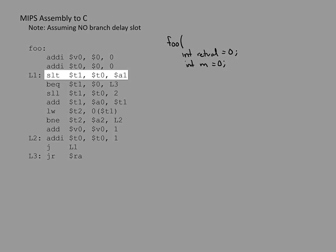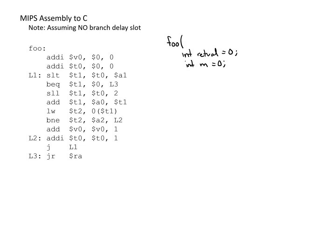The next instruction sets T1 to 1 if T0 is less than A1. Since T0 is M, this is saying T1 equals whether M is less than A1. A1 is an argument to the function — since arguments start at 0, this is the second argument, which I'll label argument 1. From this we can also deduce that the function has input arguments, including argument 0.